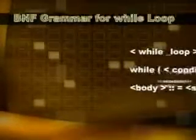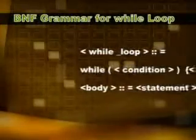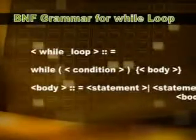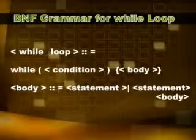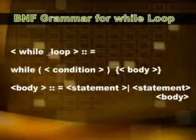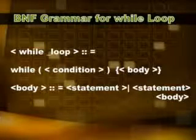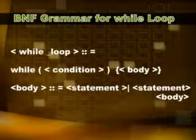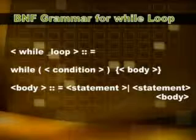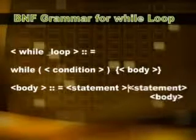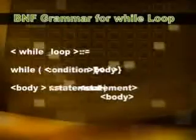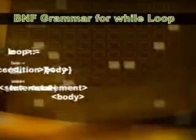Now you know what the terminals and non-terminals are and how to start the grammar. We should give a name to the program — something like 'while loop' — and define 'while', brackets, semicolon, and curly brackets as terminals. Condition and statements are non-terminals. Here is the BNF grammar. A while loop can have a condition and a body either without curly brackets or with curly brackets.